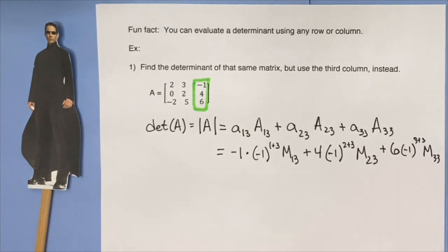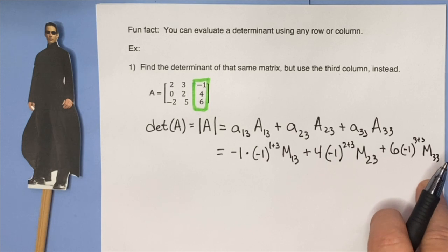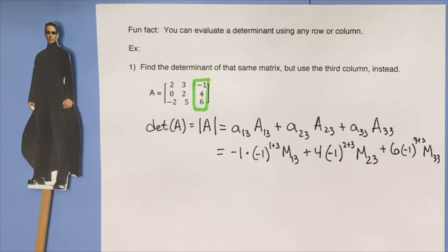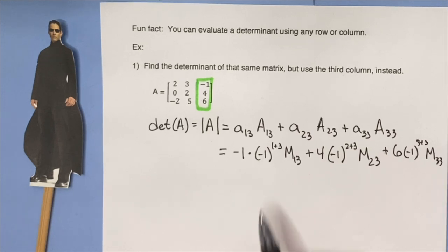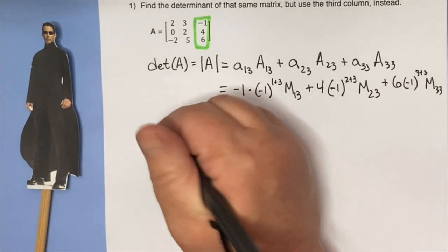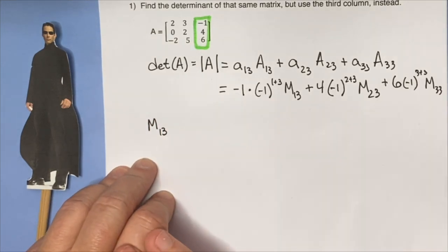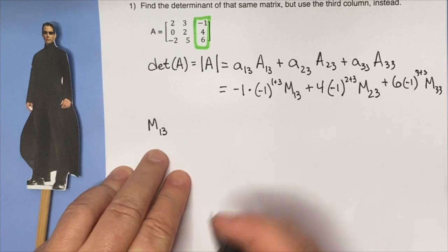So we need to figure out what these minors are. Now, if we were to look back, we may have already calculated one of these. For the purposes of practicing, I'm going to go ahead and do them all again, just so you get a good refresher. But if you've already calculated one of these minors, you don't have to calculate it again. The minor at (1,3) looks like this — remember, we write the whole matrix.